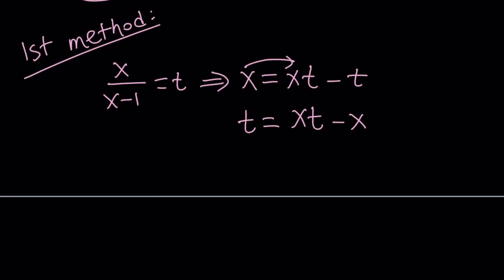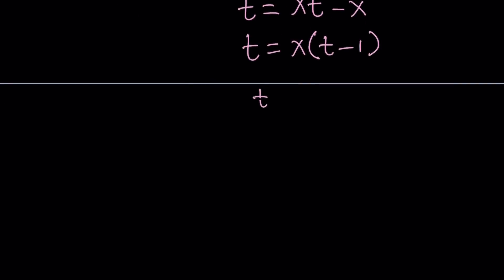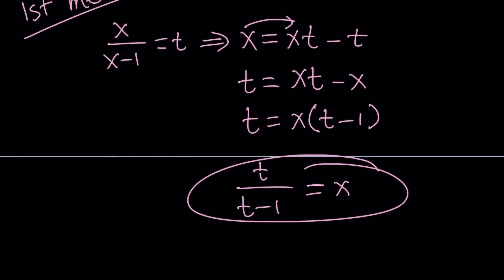Alright. So, now we were able to isolate x. Because what we can do is, we can go ahead and factor the x out. And then, finally, divide both sides by t minus 1. So, from here, t over t minus 1 becomes x. Or you could also write it as x equals t over t minus 1. Same thing. Okay, great.